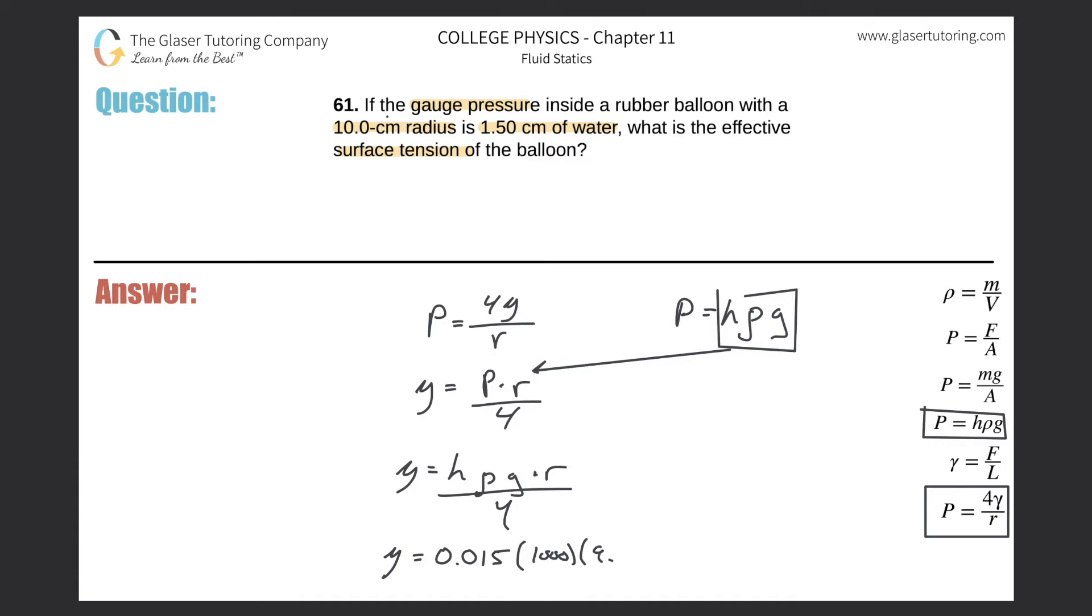Gravity is 9.8, and the radius then they told us was 10 centimeters, but we need that in terms of meters. So just move the decimal two places to the left, so 0.1, and then divide it by four. And all we need to do now is calculate, so now we'll get our gamma value.